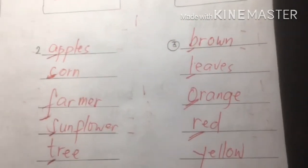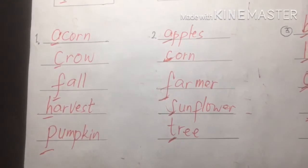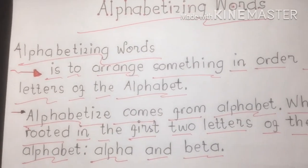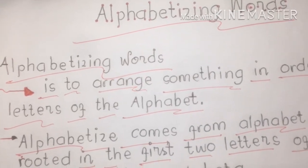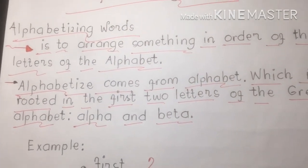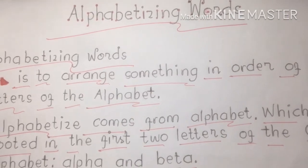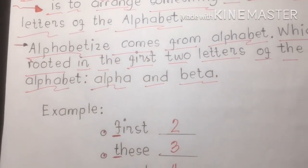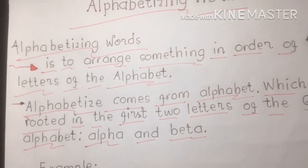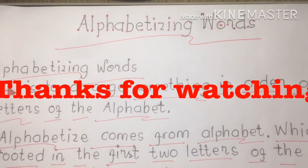That is how you arrange words in alphabetical order — through alphabetizing words. Remember, 'alphabet' comes from alpha and beta, meaning we arrange something in order of the letters of the alphabet. Hope you understand our topic today on how to alphabetize each word. Thank you for watching Ram's Tutorial Educational Channel. Don't forget to like, share, and subscribe. Bye and see you in the next video!